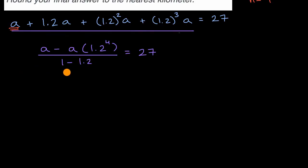And so, let's see. I can simplify this a little bit. We could, this is going to be equal to negative 0.2. Our numerator, we can factor out an A, and so this is going to be equal to A, times one minus 1.2 to the fourth power.